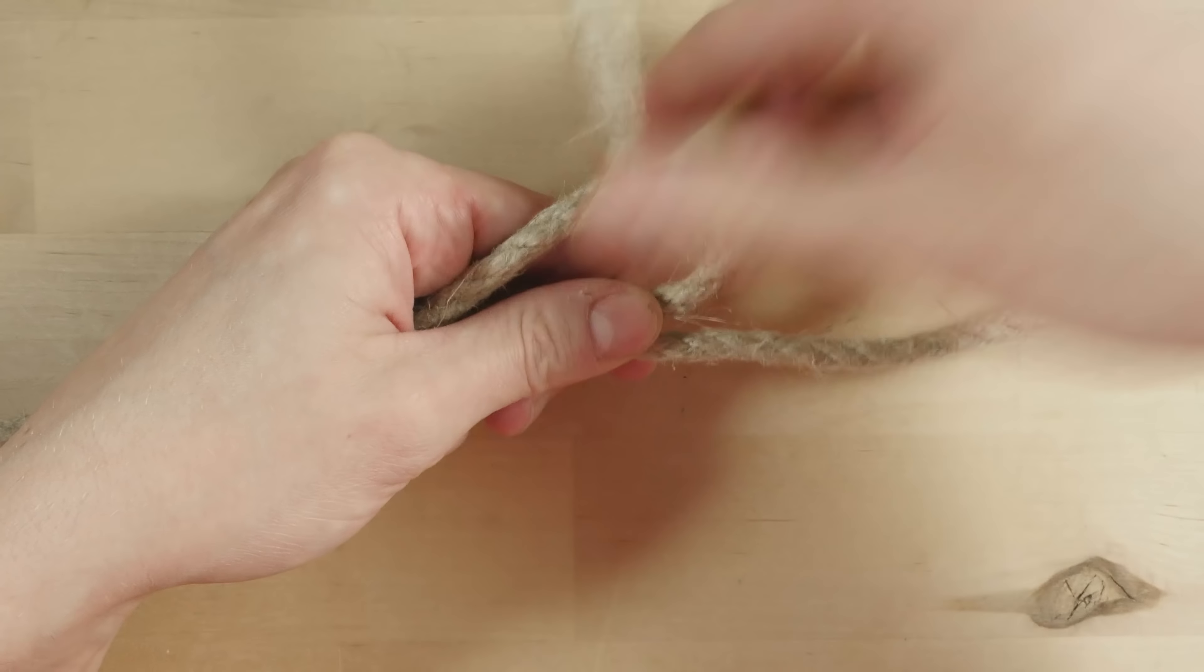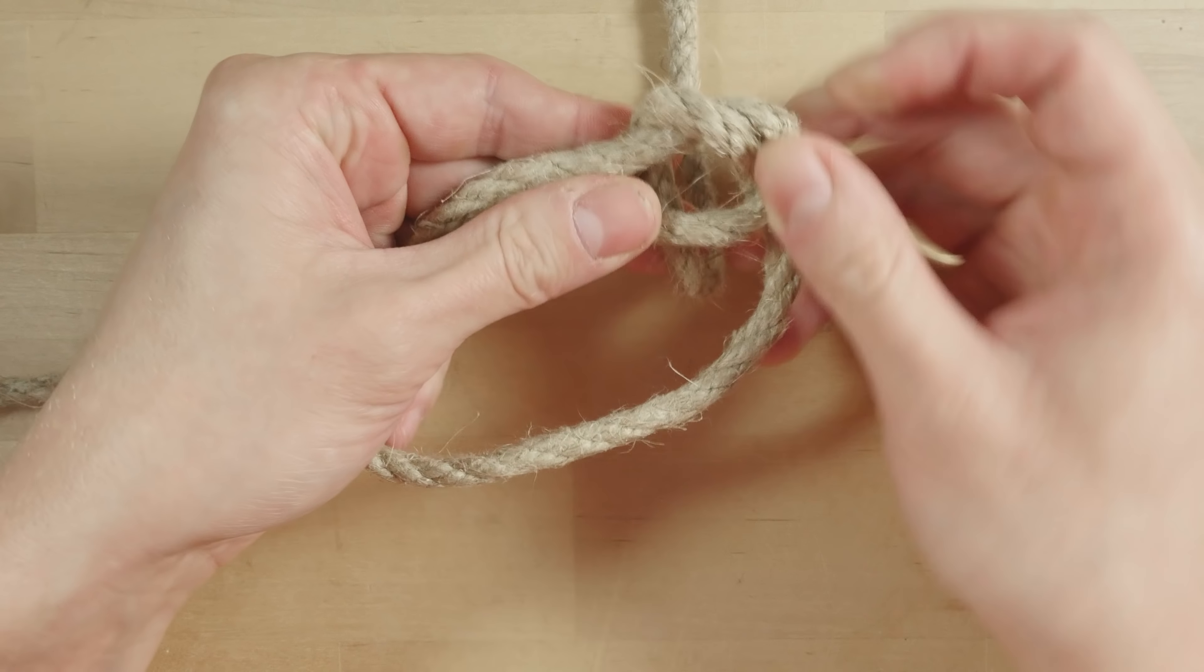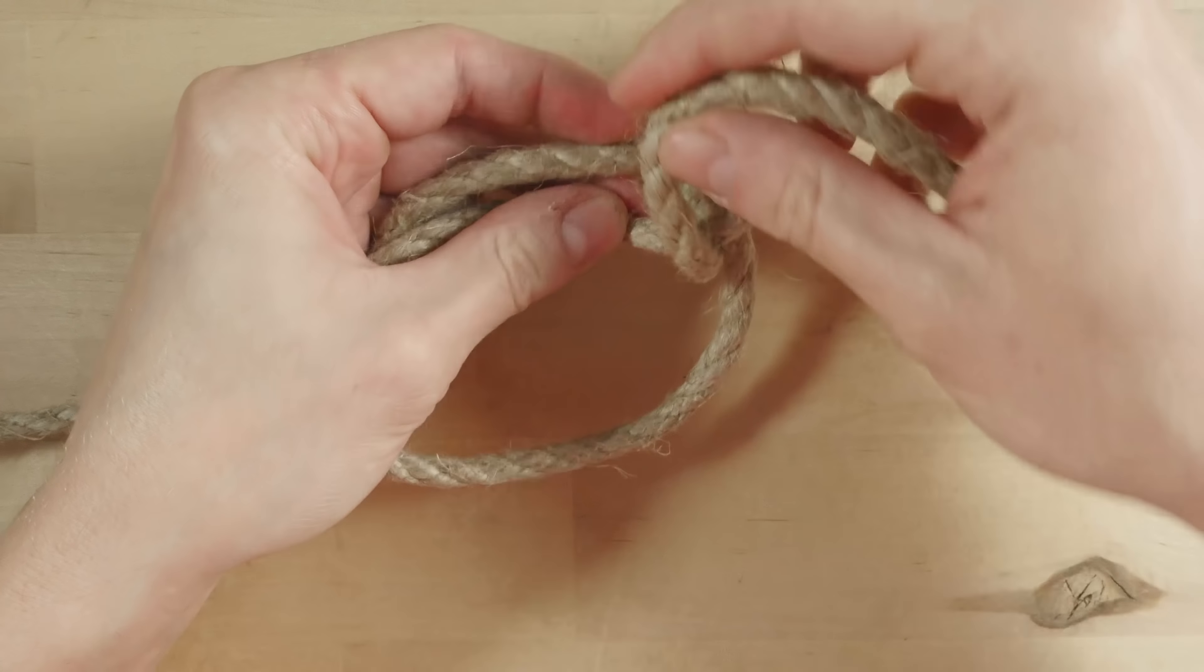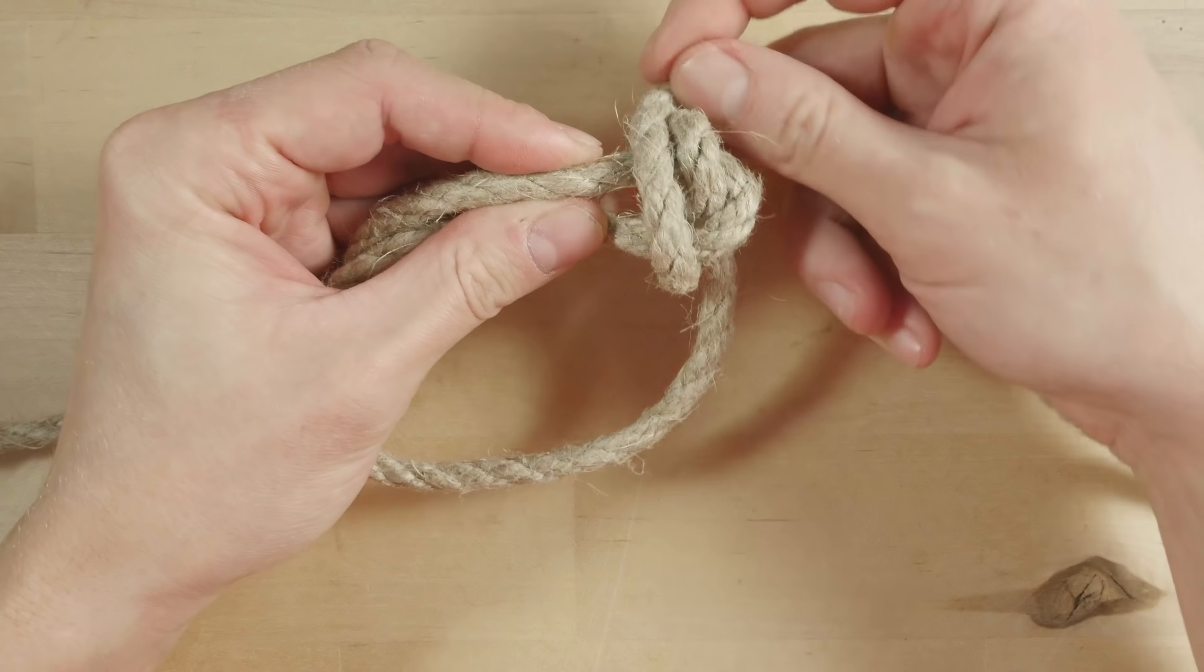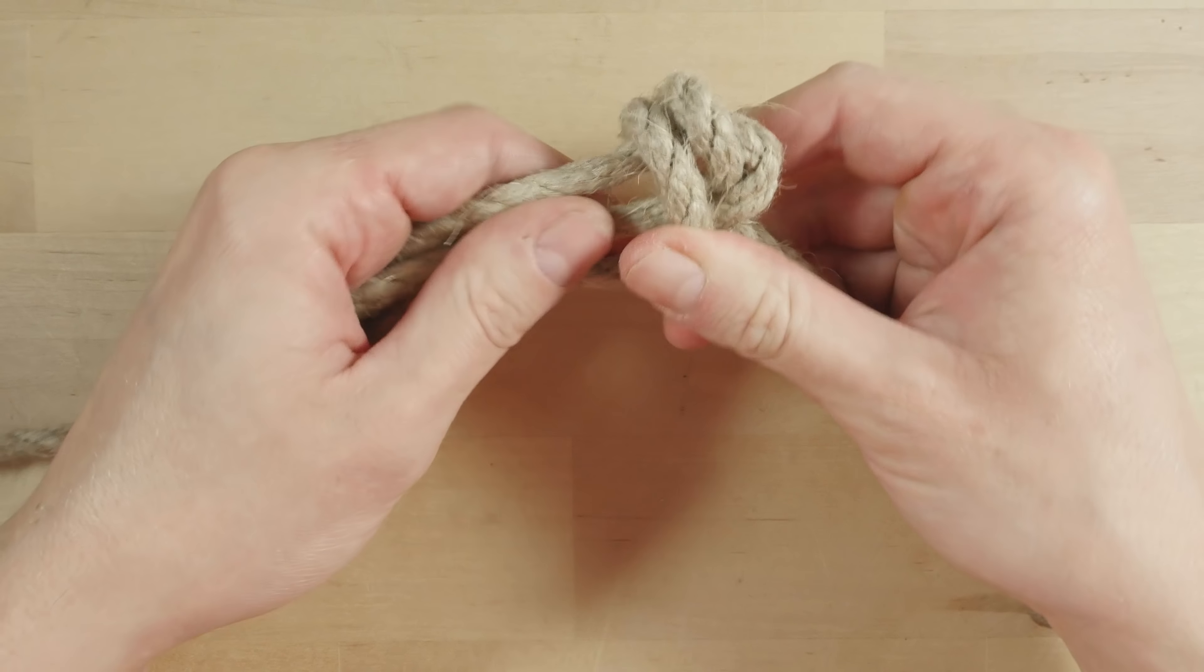So like this. Now I'm going to pass under two and come up. Then over two and come down. And then simply wrap around your three strands. Simple wrapping turns.